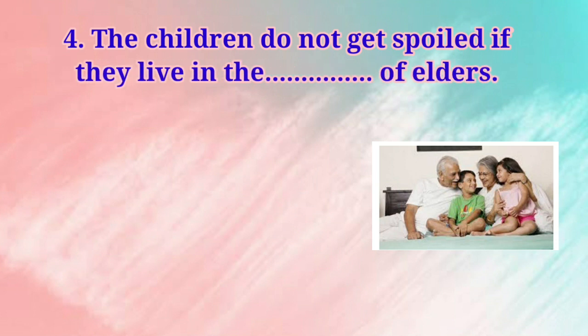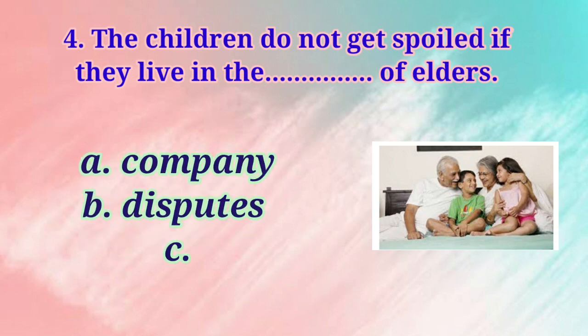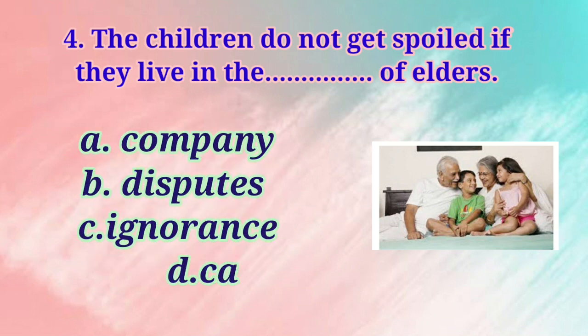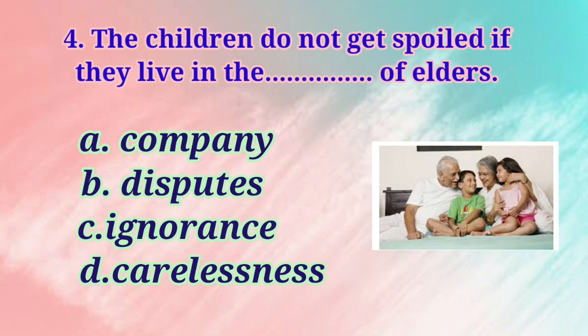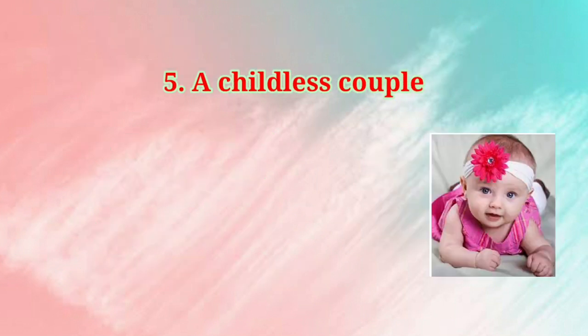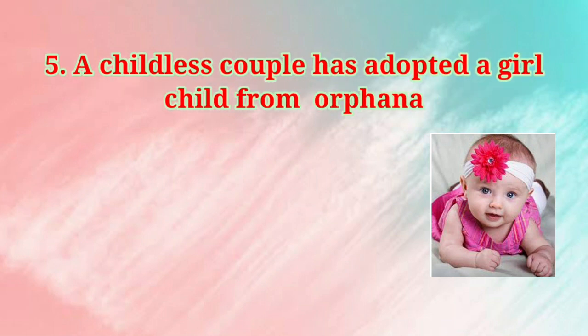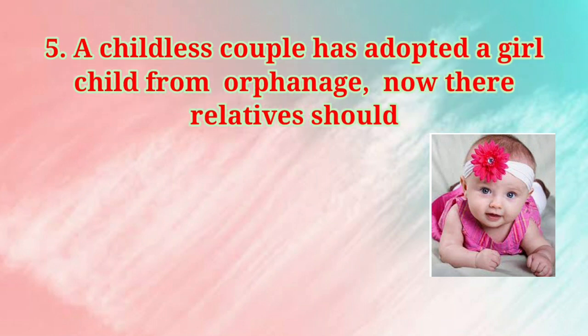Number 4: The children do not get spoiled if they live in the dash of elders. The options are: Company, Disputes, Ignorance, or Carelessness. So, kids, which is the correct option? Ma'am, it's option A — Company. Very good!